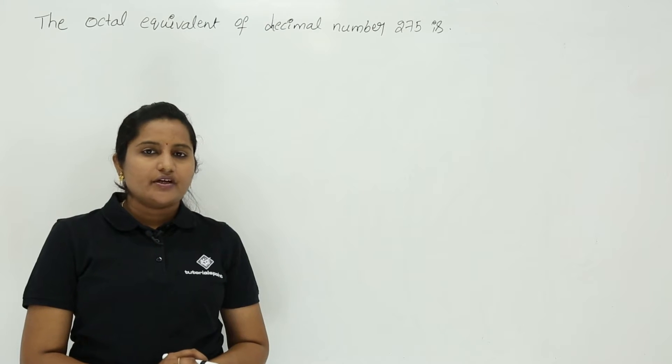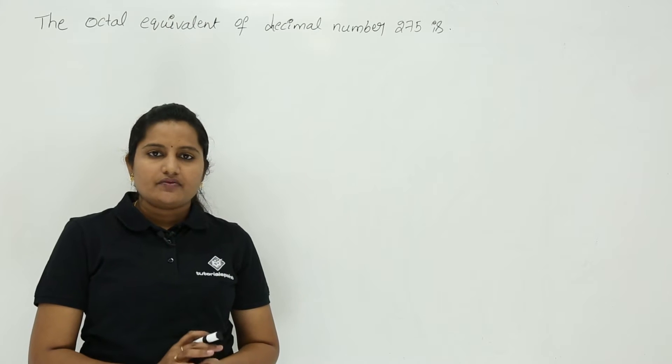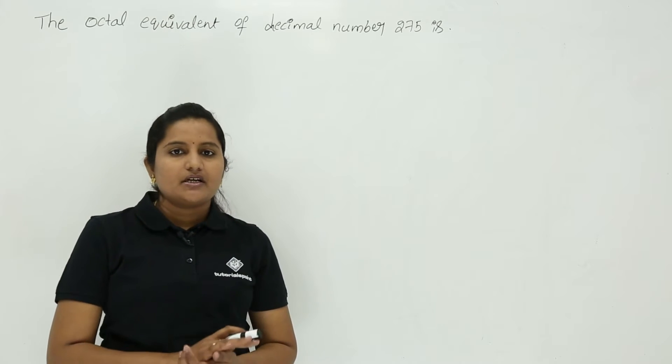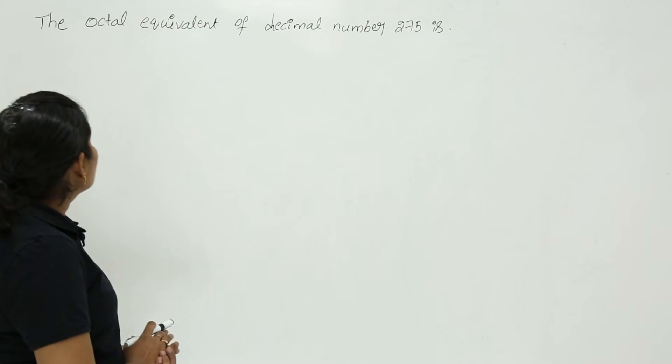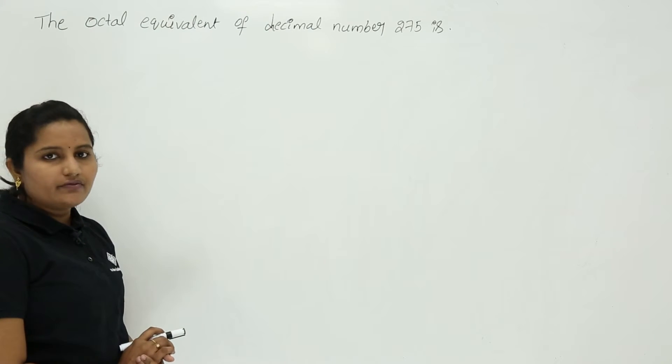In this class we are going to discuss a problem related to conversion. The conversion is decimal to octal. See the problem. The octal equivalent of decimal number 275 is.